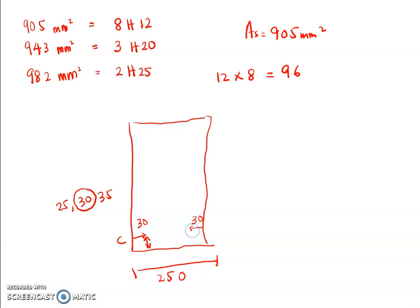Usually, concrete cover will have a value of 25, 30, or 35. Usually we will use 30. So 30 here and 30 here. We have concrete cover here so that the concrete cover will cover the reinforcement from corrosion. What's left? 250 minus 60 is 190.